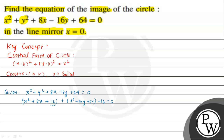We can see that x² + 2·x·4 + 4² gives us the perfect square for the x terms. For the y terms, y² - 16y becomes y² - 2·y·8 + 8², giving us 8² equal to 64, and the remaining constant is -16.